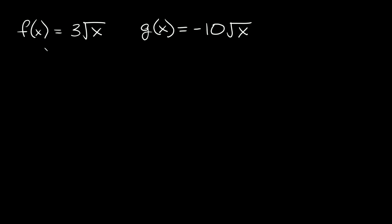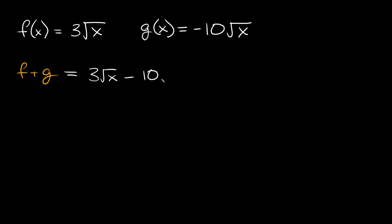So let's start with this one right here. We have f of x is equal to 3 times the square root of x, and g of x is equal to negative 10 times the square root of x. If we wanted to add these two together, we would say f plus g is equal to — and then you would literally just add the two functions together. So here we would just say 3 square root of x minus 10 square root of x.